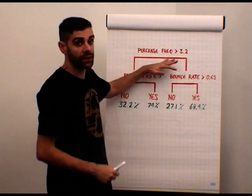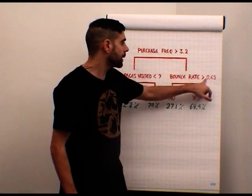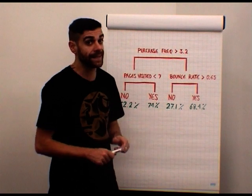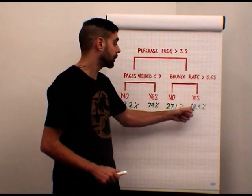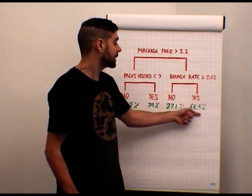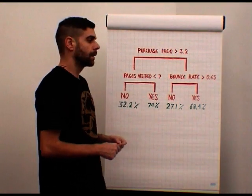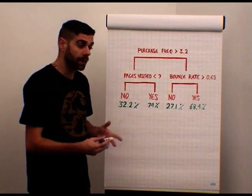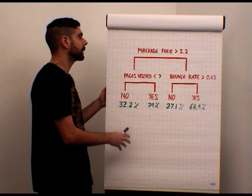Let's say we have a purchase frequency greater than 3.2 and a bounce rate greater than 0.65. So this user, yes, will buy some product on our website. And this yes has a 68.4% probability that it's true. That's basically how predictive models work applied in weather forecasting but also in online marketing forecasting.